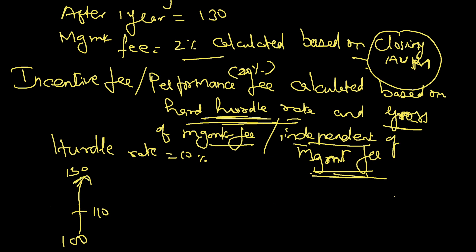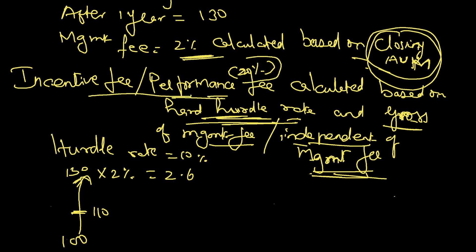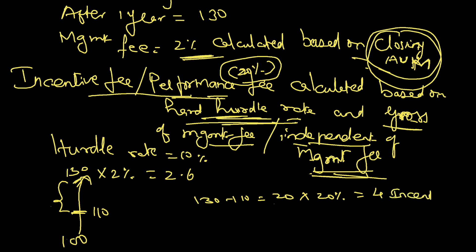The hurdle rate is crossed, so the fund manager is eligible for incentives. Management fee is 2% based on closing assets under management: 130 into 2% comes to 2.6. So 2.6 is the management fee. For hard hurdle rate, incentive fee is calculated on 130 minus 110, which equals 20. 20% of 20 equals 4. So 4 is the incentive fee.